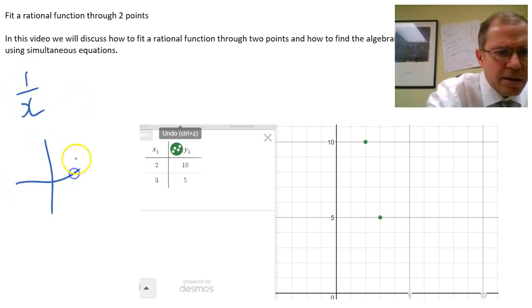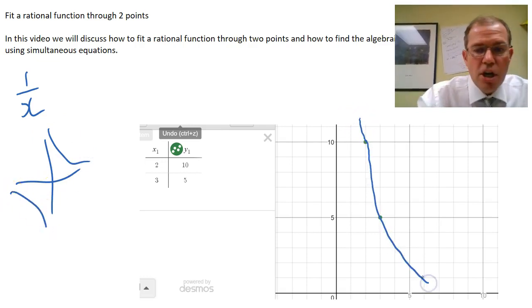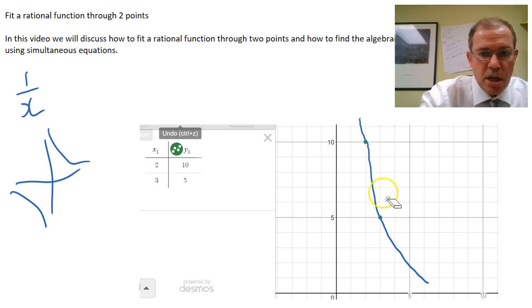Well we know 1 over x looks like that roughly, so it's very feasible that we could get a rational function going through those two points.